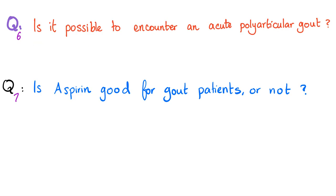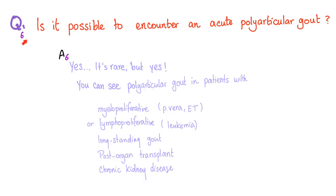Is it possible to encounter an acute polyarticular gout? I've told you before that gout is monoarticular when it's acute. Can it be possible to have acute polyarticular? Yes, it's rare, but yes.